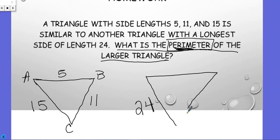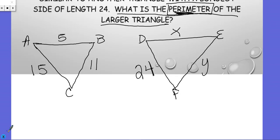So I have my two triangles together and it asks me to find the perimeter. That means I need to find x and y, and then once I find x and y, I need to add all of these sides together of the larger triangle.